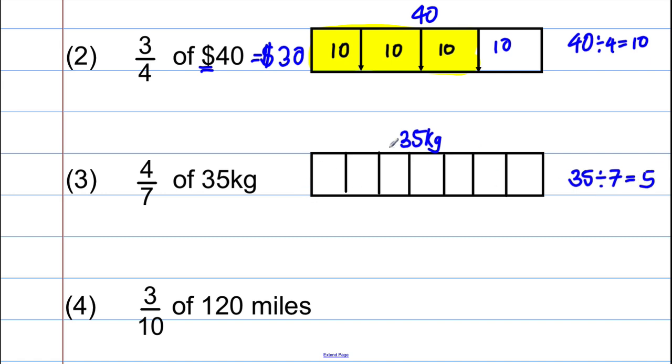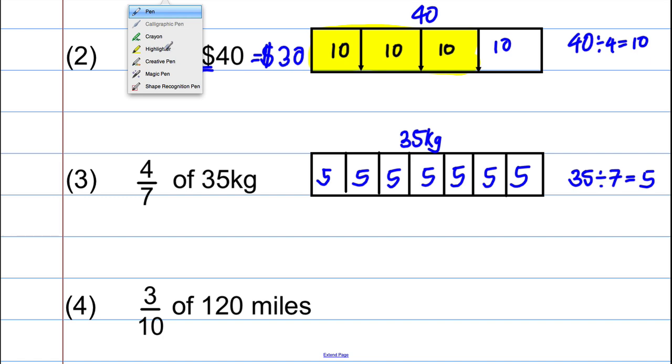Or if you struggle with your divisions, think of what number multiplied by seven gives you 35. And hopefully, you can come up with five. So if five goes in each box, there we go. And we want four of those sevens. So we want four of the boxes as follows. And the answer will be five plus five plus five plus five, which is 20.